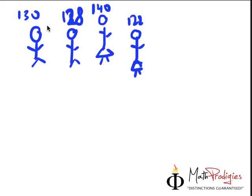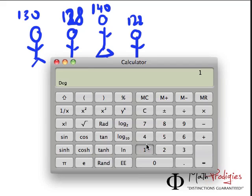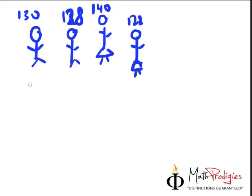It's basically 130 plus 128 plus 140 and plus 122. Let's make a calculator. So 130 plus 128 plus 140 plus 122. So that total height is 520. How many people are there? There are four people. So that means the average height is 130cm.